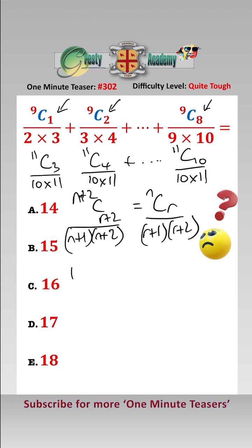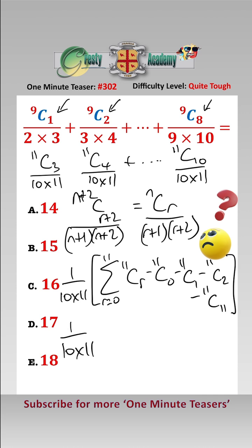Therefore, our summation becomes 1 over 10 times 11 times the sum from r equals 0 to 11 of 11Cr, taking away the missing ones which are 11C0, 11C1, 11C2, and 11C11.